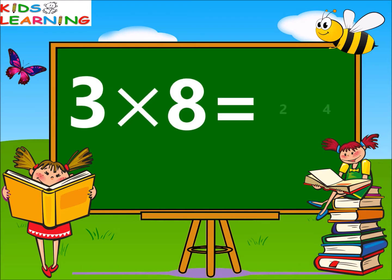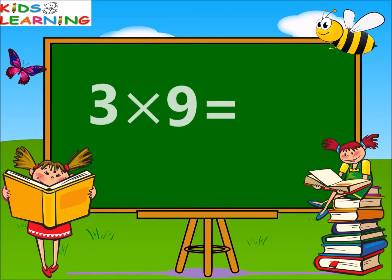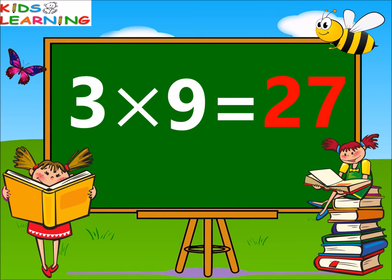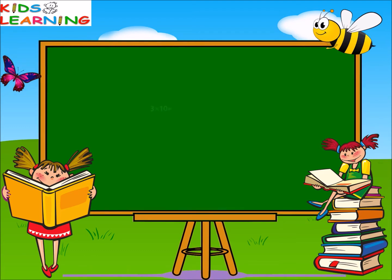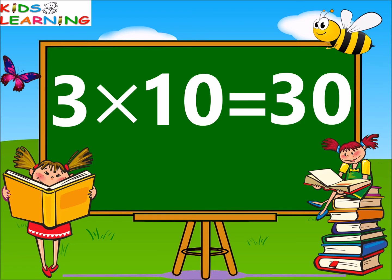Three eights are twenty-four. Three nines are twenty-seven. Three tens are thirty.